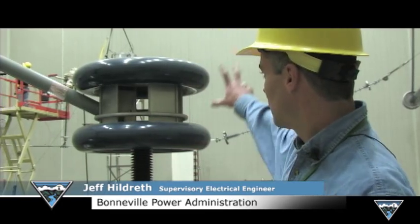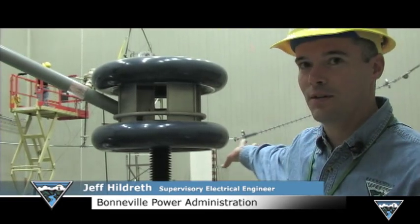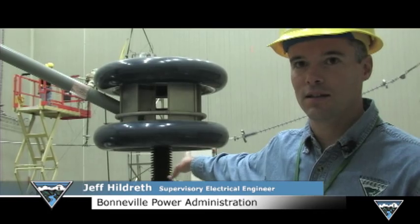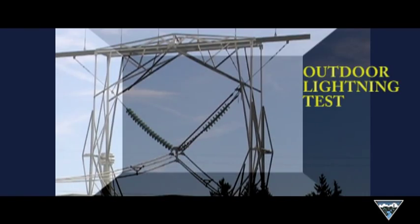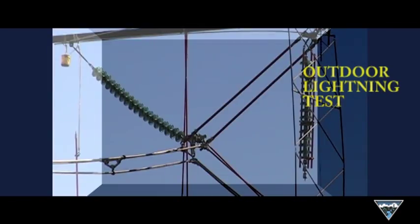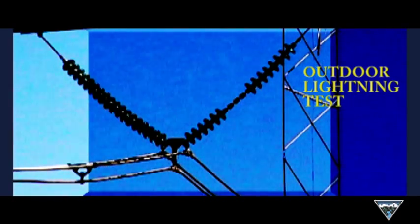And then the other type of test that we do is the impulse generator, which is behind a cloth over there. We're protecting it because of the testing that we're doing today. But with that, we can produce lightning here in the building. That models when lightning strikes our transmission lines. We want to make sure that they can withstand that and all the equipment associated with it can withstand the lightning strike.